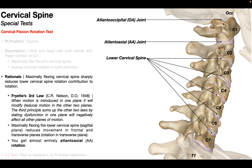Right here we see all the bones of the cervical spine. We have the occiput up top, C1 the atlas, C2 the axis, and then C3 down through C7. When we look at the joint between the occiput and the atlas, or C1, this would be the atlanooccipital, or OA, joint. If we look at the joint between the atlas, C1, and the axis, C2, this is the atlanoaxial, or AA, joint. These two joints comprise the upper cervical spine.